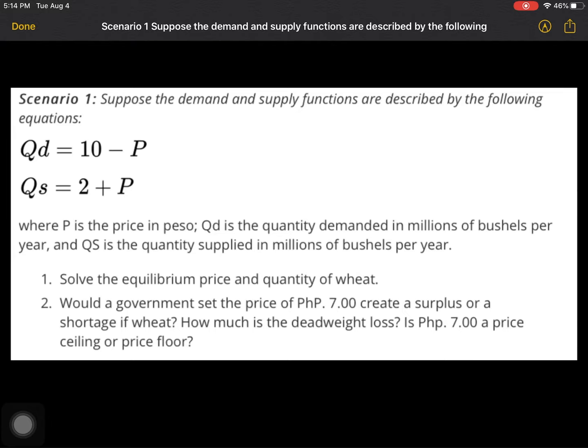So in this video, I'm going only to answer scenario one because it will be the same process in scenario two. So for scenario one, it tells here that suppose the demand and supply functions are described by the following equation. We have QD equals 10 minus P and QS equals 2 plus P.